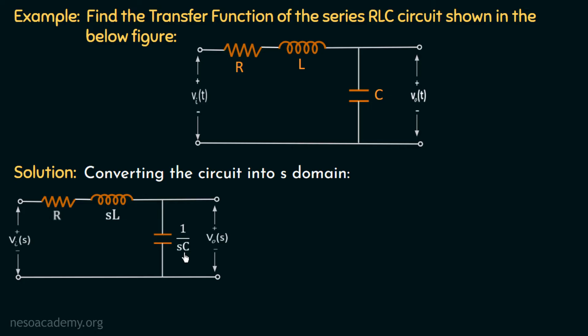The output voltage, which is measured across the capacitor, is Vout. We need to calculate the overall transfer function, which is the ratio of Vout to Vi. In this circuit, these three elements are present in series and we can calculate the output voltage by using the voltage divider rule.